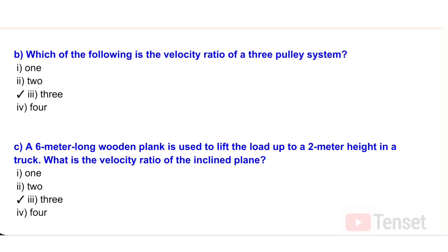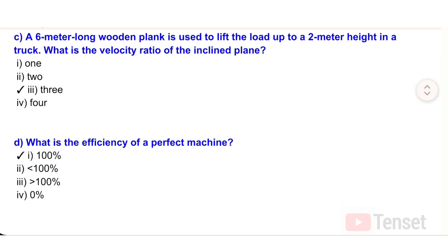Question B: Which of the following is the velocity ratio of a three-pulley system? Options: i) one, ii) two, iii) three, iv) four. Question C: A six-meter long wooden plank is used to lift a load up to a two-meter height in a truck. What is the velocity ratio of the inclined plane? Options: i) one, ii) two, iii) three, iv) four.